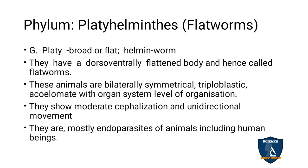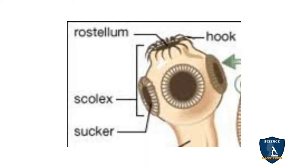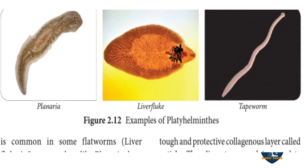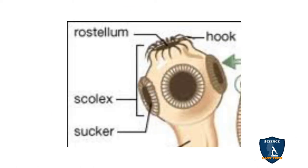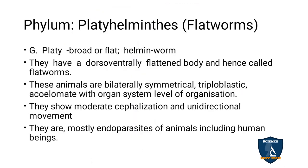They have a dorsoventral flattened body, hence they are called flatworms. You can see the dorsoventral body — dorsoventral means both sides are visible: the upper side and the lower side. So the two sides you can see, with an upper surface and a lower surface — that is called dorsoventral.